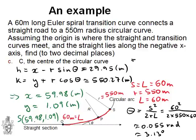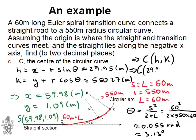So, what that means is that the center, C, of the circular curve, which would sit somewhere probably here, is going to be H, K. So, that means the center has coordinates 29.95 and 550.27. And this is Part C.